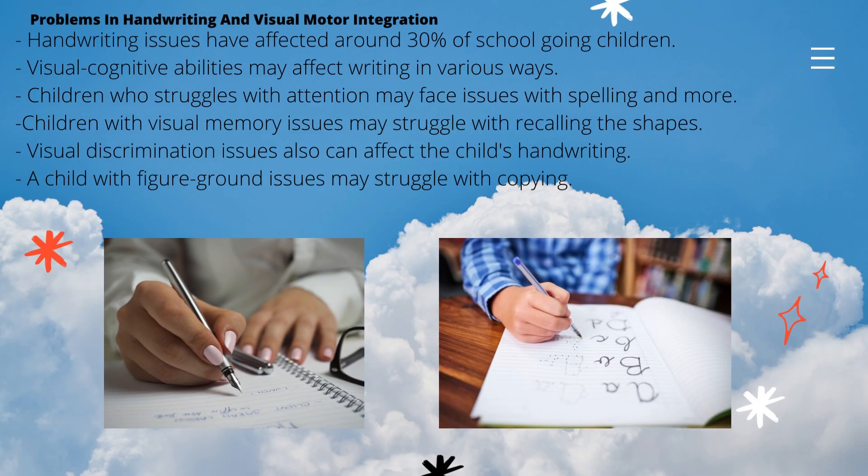Now coming to the problems in handwriting and visual motor integration. Handwriting problems have affected around 30% of school-going children. Visual cognitive abilities may affect writing in many ways. Children who struggle with attention may face issues with spelling and more. Correct letter formation, spelling, grammar, mechanics, function and capitalization are all areas that can be affected. Children with visual memory issues may struggle with recalling the shapes and formation of letters and numbers.